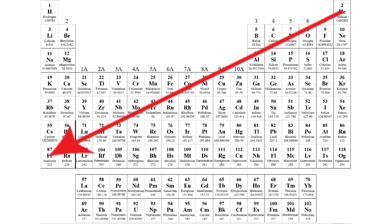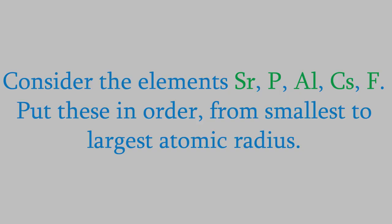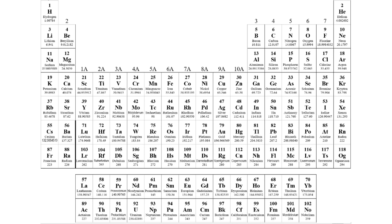So let's try an example. Suppose we have atoms of strontium, phosphorus, aluminum, cesium, and fluorine. Let's put these in order from smallest radius to largest. The first thing we need to do is find each of these on the periodic table. So, here are strontium, phosphorus, aluminum, cesium, and fluorine.